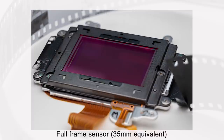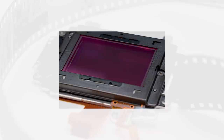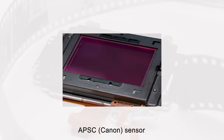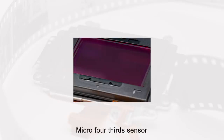For that reason full frame is sometimes referred to as the 35mm equivalent. Any sensor that is smaller in size is called a cropped sensor, and the most popular is the APS-C sensor. Canon use a slightly smaller APS-C sensor, and smaller again is the micro four-thirds system used by Olympus and Panasonic. And of course bridge cameras, compact cameras and smartphones have the smallest sensors.